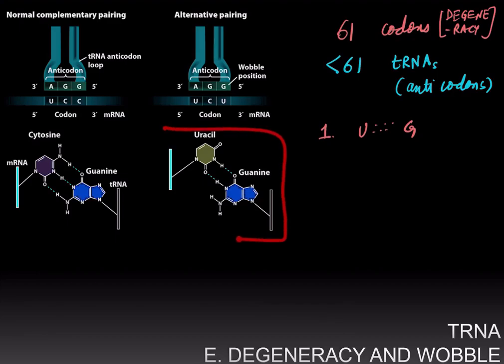And this modified base pairing, which does not follow Watson-Crick rules, only happens in the 5' position of the anticodon or the 3' position of the codon. And this position is known as the wobble position, where modified base pairing allows the same anticodon to recognize multiple different codons.